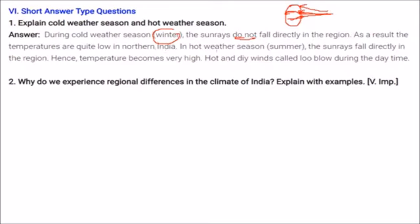In hot weather season — summer — the sun rays fall directly in the region; therefore the temperature becomes very high. Hot and dry winds called loo blow during the daytime in summers.